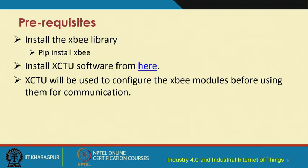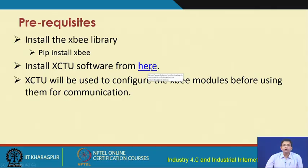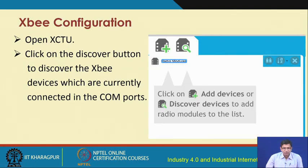As prerequisites, you first have to install the XBee library using the command 'pip install XBee', and then install the XCTU software from the provided link. XCTU will be used to configure the XBee modules before they can be used for communication — that means before the Zigbee sender and receiver can be used. After installing XCTU, you open the XCTU window and click the discover button to discover the XBee modules.